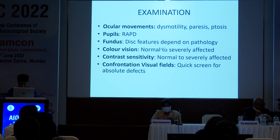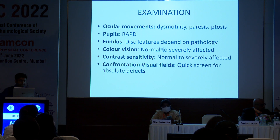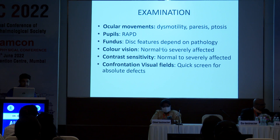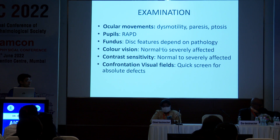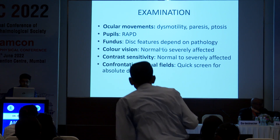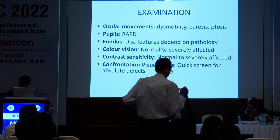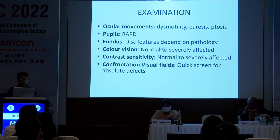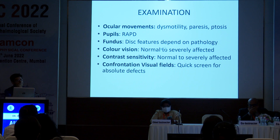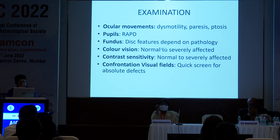On examination, look for the ocular movements, any dysmotility, any paresis, any ptosis, and look at the pupillary responses, particularly the RAPD. In the fundus, look at the disc features, and depending on the pathology, do the color vision — it's very important — and the contrast sensitivity. If the visual functions seem to be affected out of proportion to the visual acuity, that may sometimes be seen in optic neuritis. Do a confrontation visual field to get a basic idea of the visual field effect.